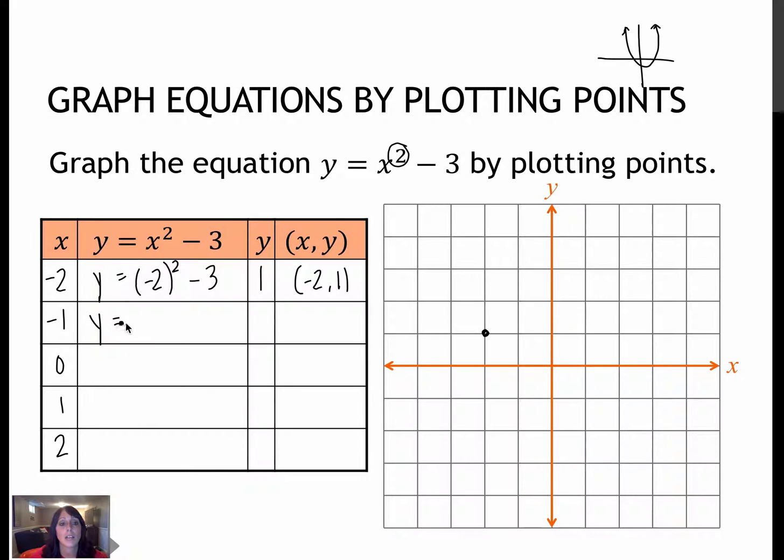For negative 1, I would get y equals negative 1 squared minus 3. Negative 1 squared is positive 1. 1 minus 3 is negative 2. And I'll plot that point.